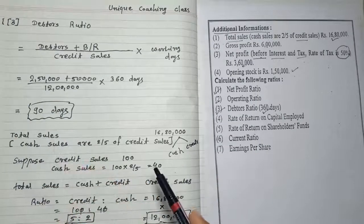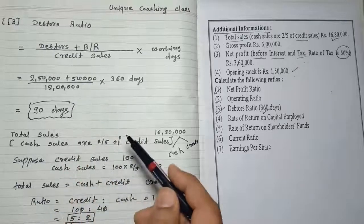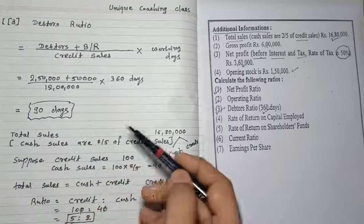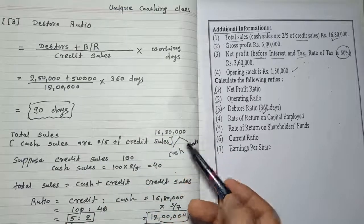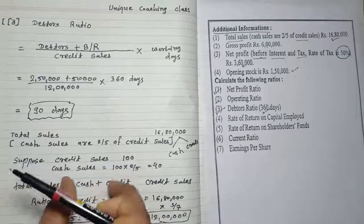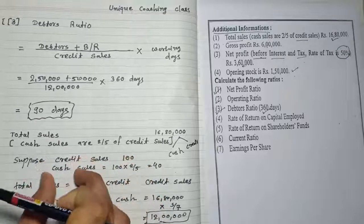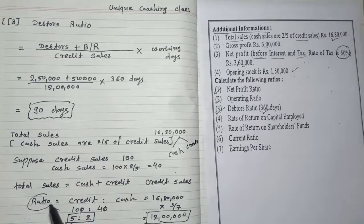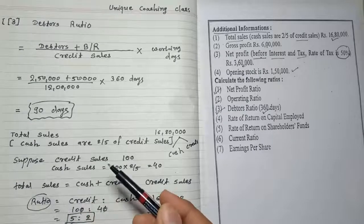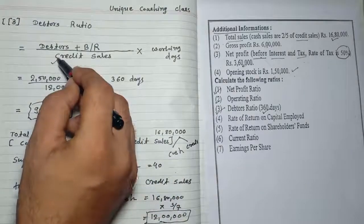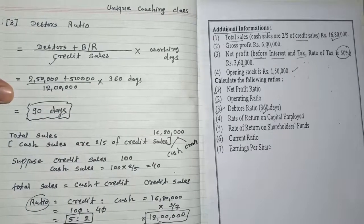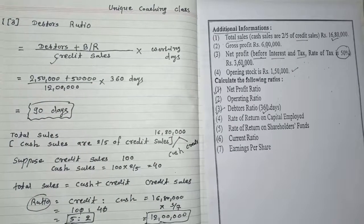Remember: when only total sales is given, look for a clue in the additional information about the relationship between cash and credit sales — for example, cash sales being two-fifths or two times or three times of credit sales. Use that clue to find credit sales.